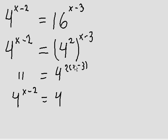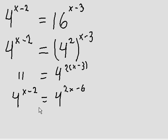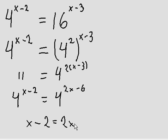I'll expand the 2 and multiply it by x and by negative 3. So 2 times x is 2x, and 2 times negative 3 is negative 6, or minus 6. Now, since we have the same base, I can actually make the exponents equal. So x minus 2 equals 2x minus 6.